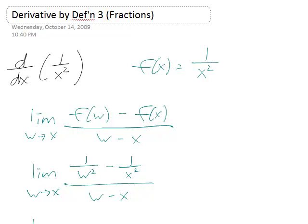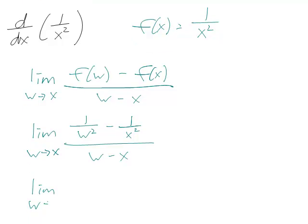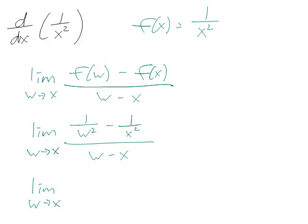The next step is to combine the top fractions, because you have a difference of fractions on top, so this will be x squared over w squared x squared minus w squared over w squared x squared all over w minus x.